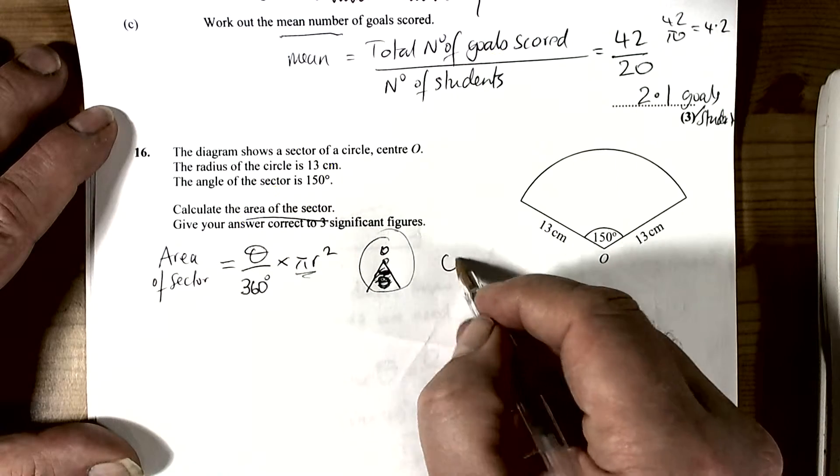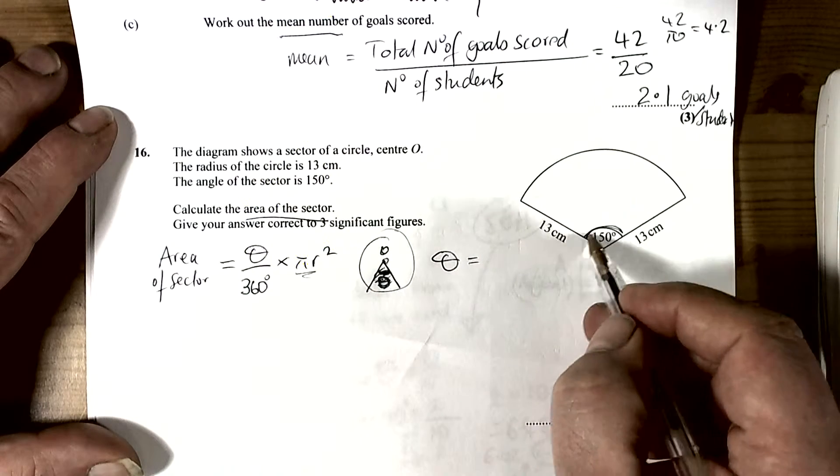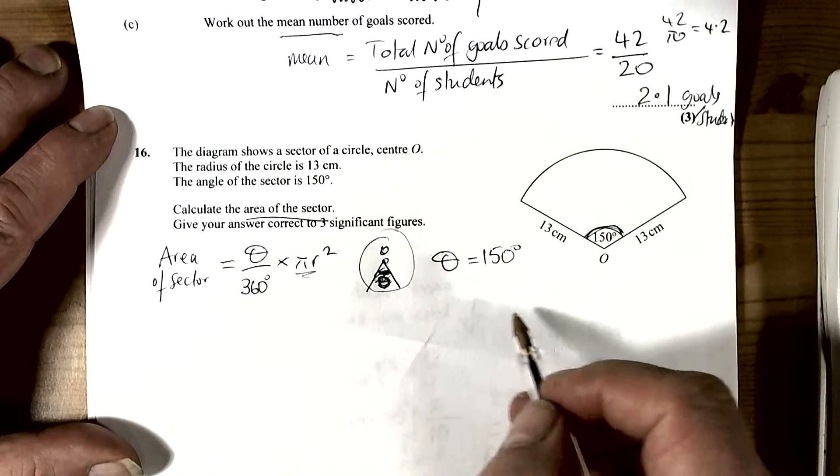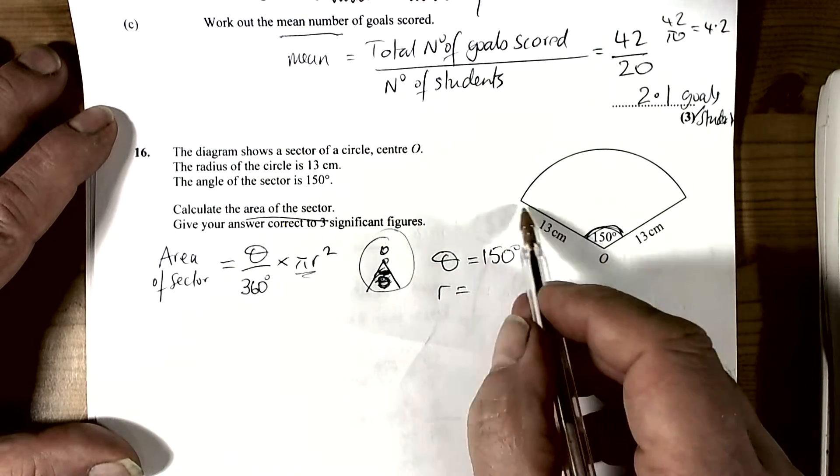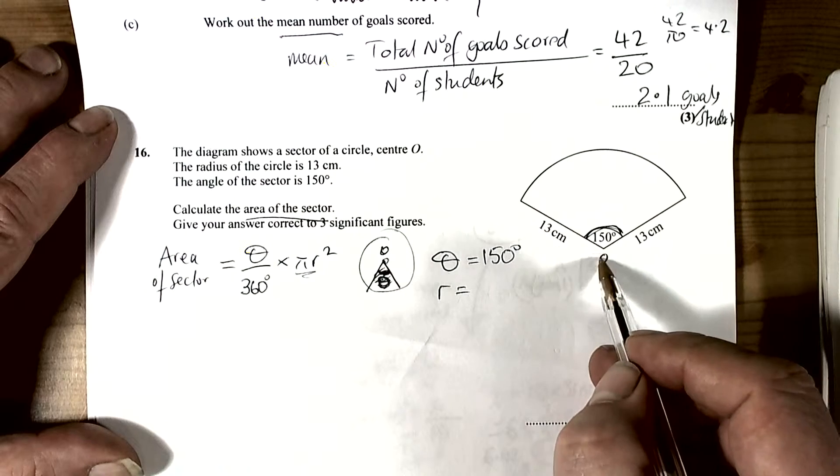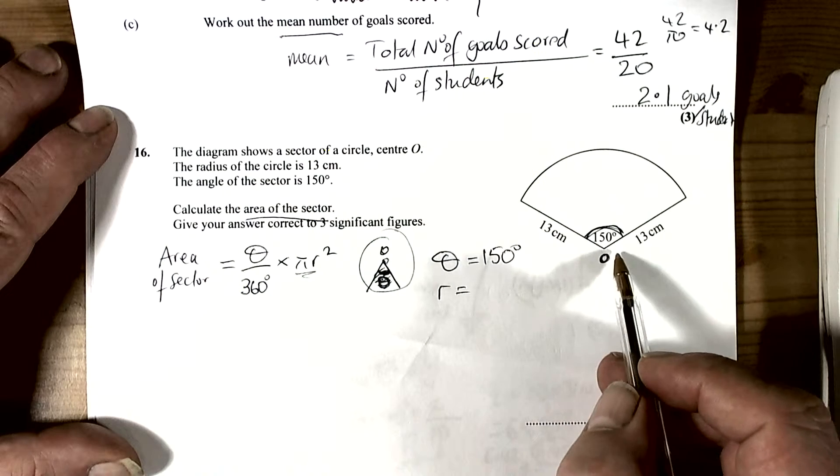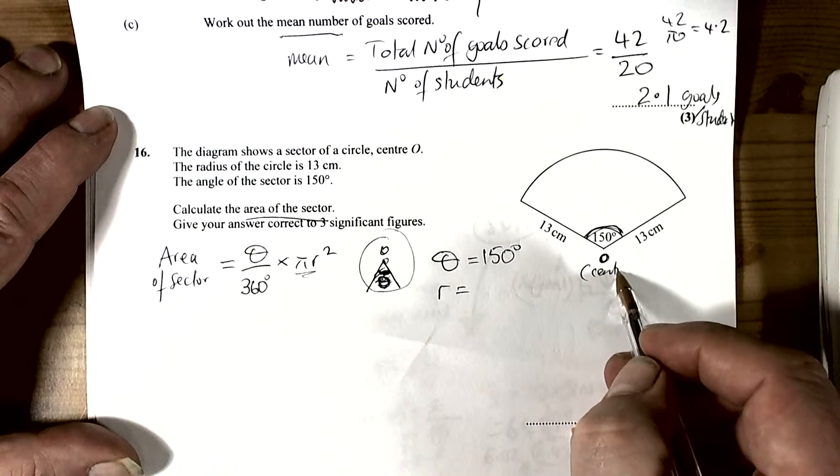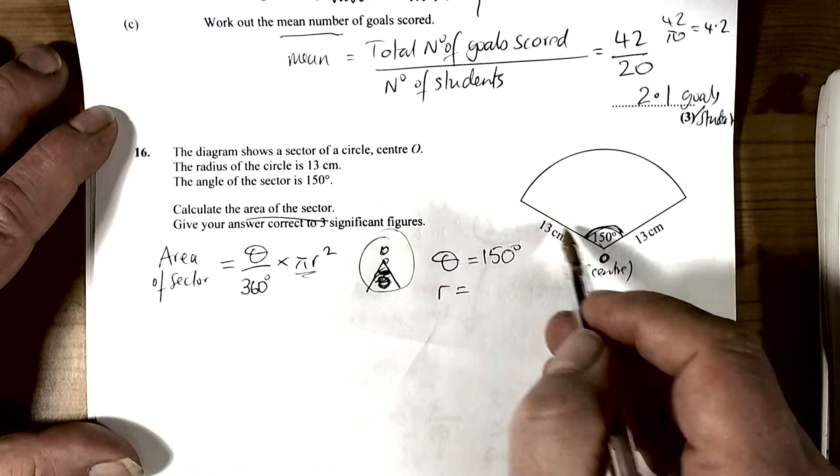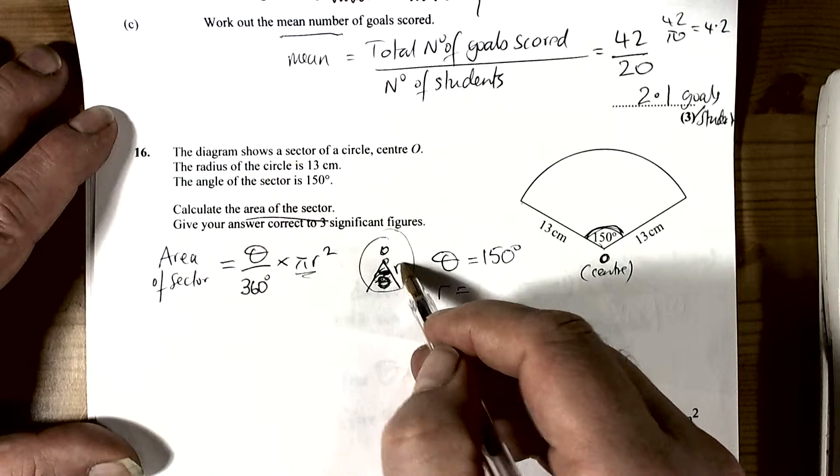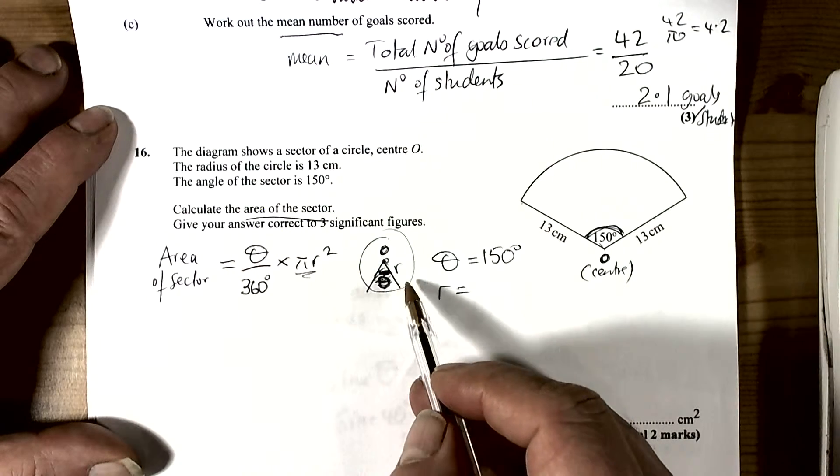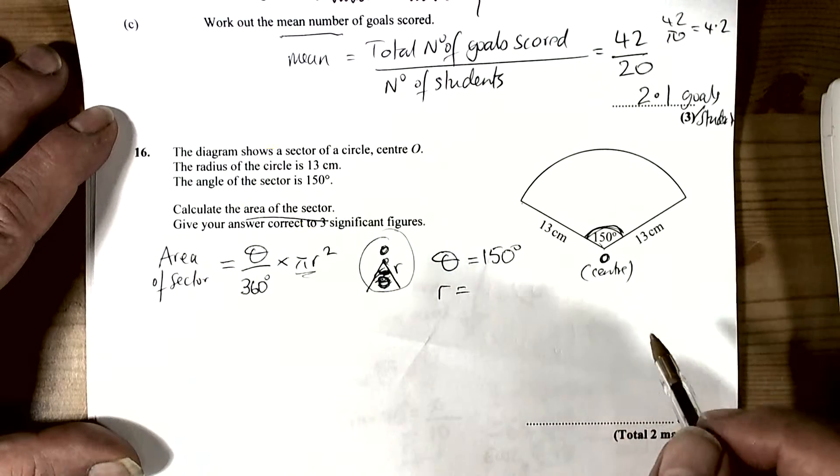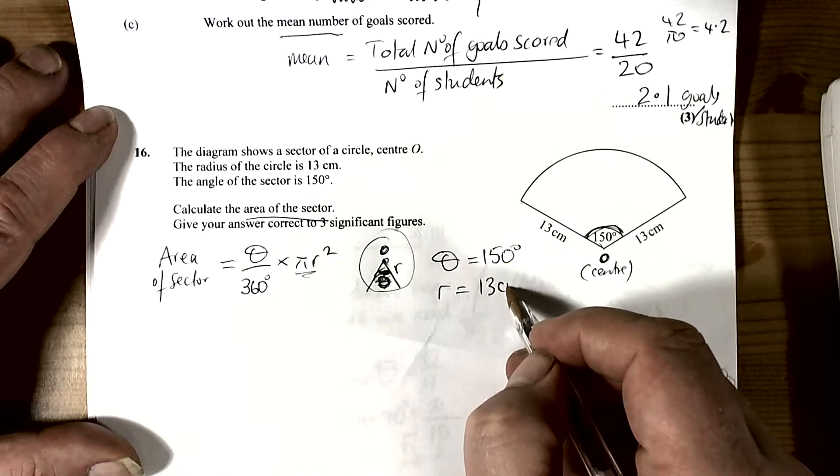So in this case, we can identify that theta is 150 degrees because theta is always the angle inside the sector, and the radius has been given as 13cm. We know this is the radius because we tend to use the letter O to represent the centre of a circle. The radius is from the centre to the outside, so r in this case is 13cm.